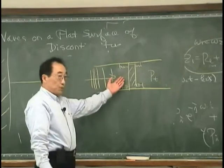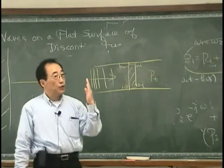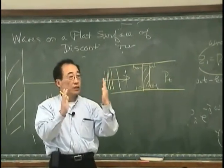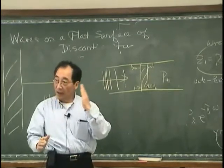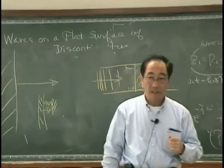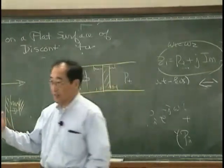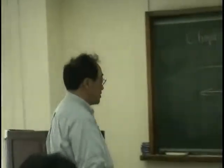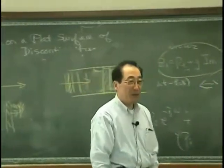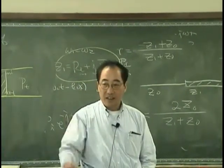The sound pressure in this domain is composed of two parts: one is the incident wave and the other is the reflected wave. That is the essential concept you have to understand in Chapter 3. So I've finished covering Chapter 3, and you are now able to tackle any problem associated with the partition. I will continue to talk about some of the details having to do with waves on a flat surface of discontinuity on coming Thursday.